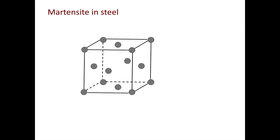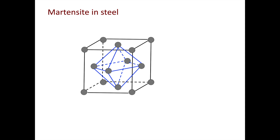Looking at steels first, we know that for iron at high temperature, the crystal structure is FCC. There's one unit cell shown here — that's the FCC unit cell structure. If we connect some of the atoms, it gives you an octahedron. In iron, the interstitial sites are shown by these red dots, and you can see the interstitial site for FCC iron is the octahedral site. If we alloy iron with carbon, carbon will sit at this site.